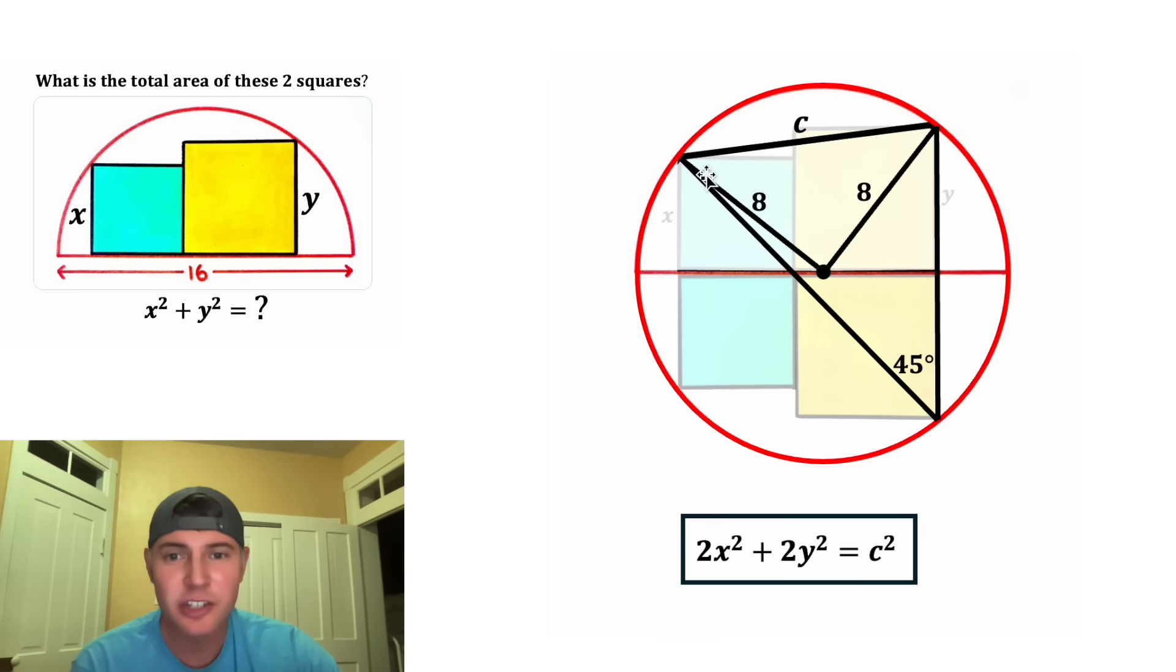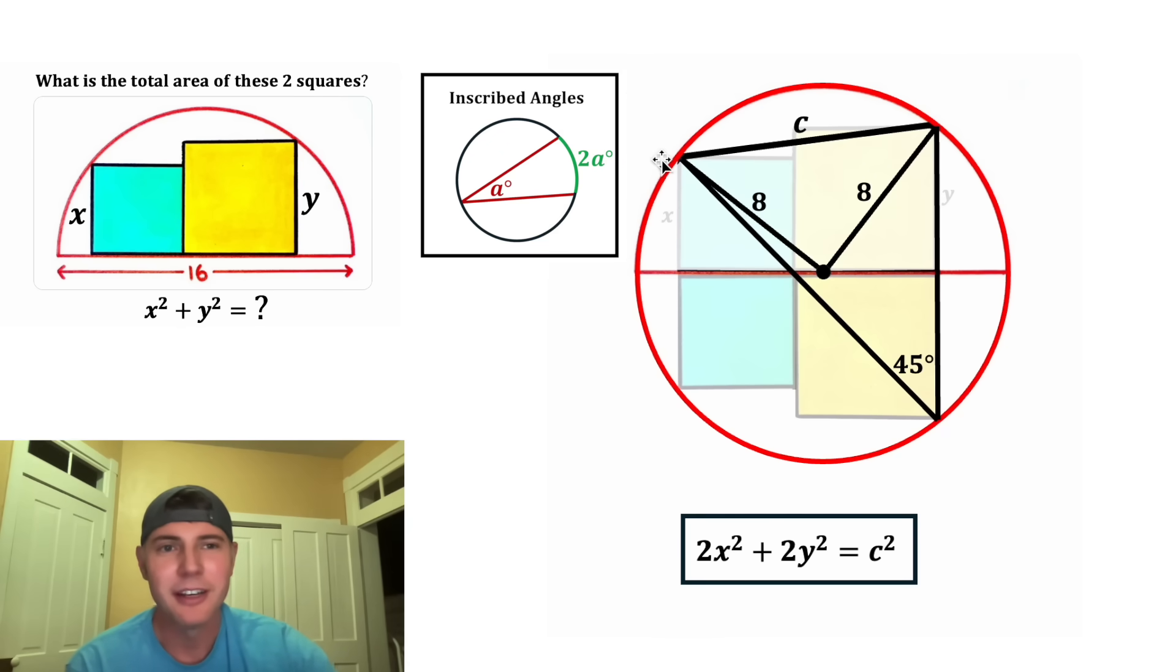This is an inscribed angle of this circle. And there's a special property. This arc is always double the inscribed angle. Here's the notes for that right here. If the angle is equal to a, the arc is equal to 2a. And that's true for all these angles. So if this inscribed angle is 45 degrees, the measure of this green arc is equal to 90 degrees.